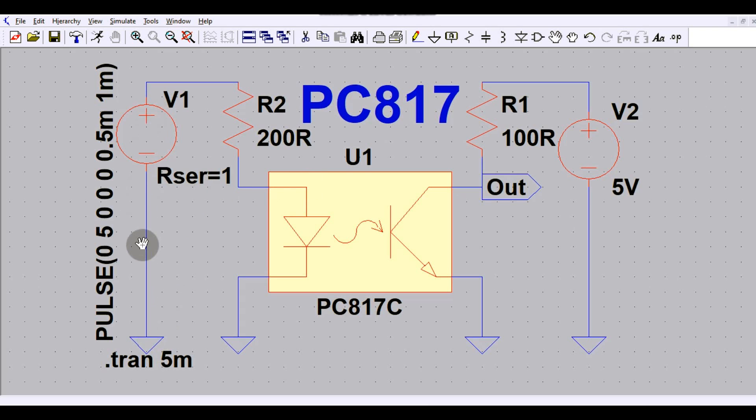Here you can see the supply voltage is 5 volt and I have biased this diode to draw a 20 milliampere current. In the 20 milliampere current you have 100% CTR, that means your current transfer ratio between this diode to this phototransistor is 100%.